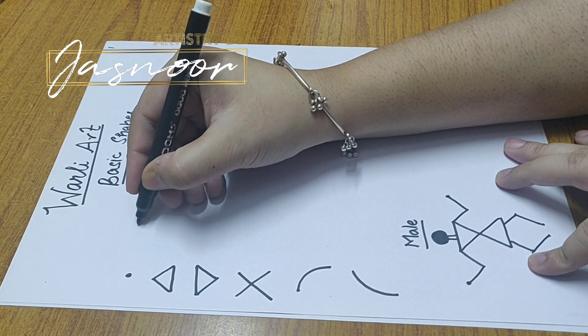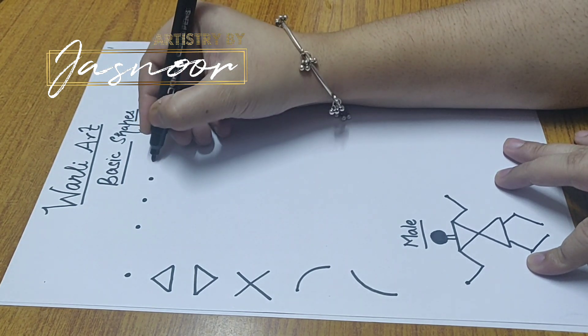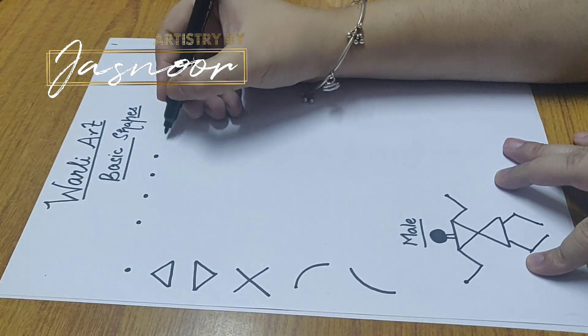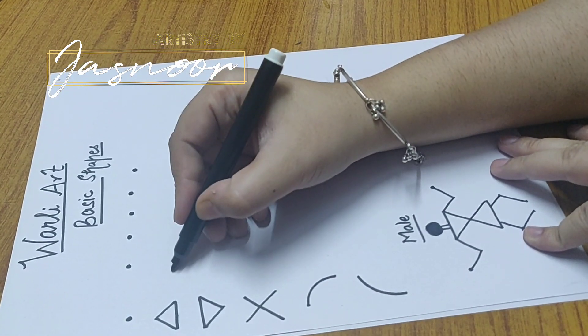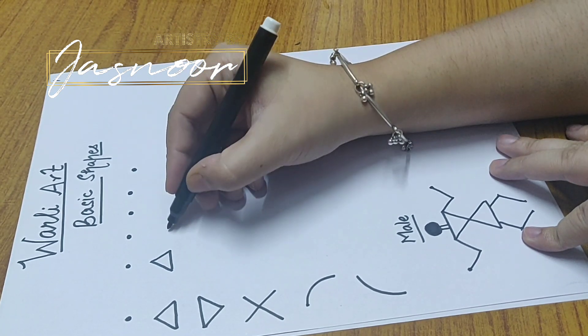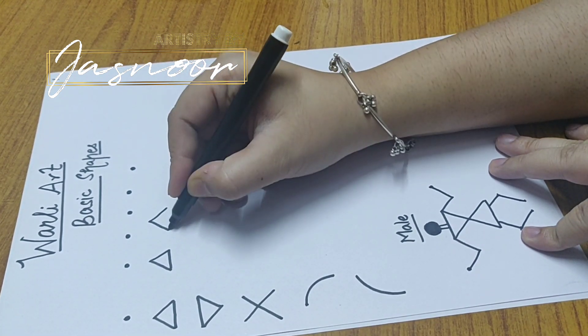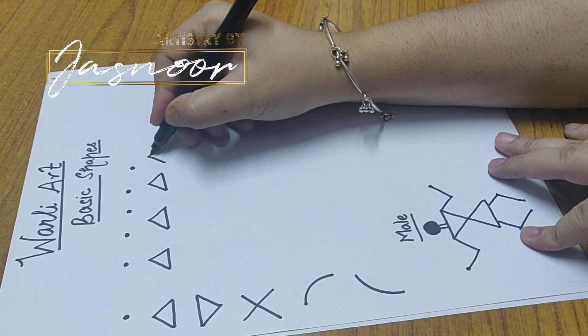So one is of course a dot, you should be able to make proper dots. And I am using a black sketch pen, nothing else in this. Then triangles. Because if you have seen Warli art, it is made from triangles only. All the figures include triangles. And this is tribal art form.